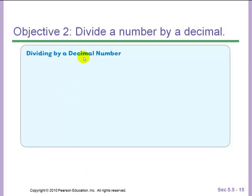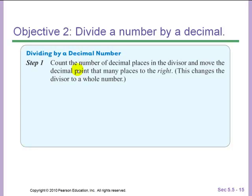Objective 2: divide a number by a decimal. When you're dividing by a decimal number, first count the number of decimal places in the divisor and move the decimal that many places to the right. This changes the divisor to a whole number.